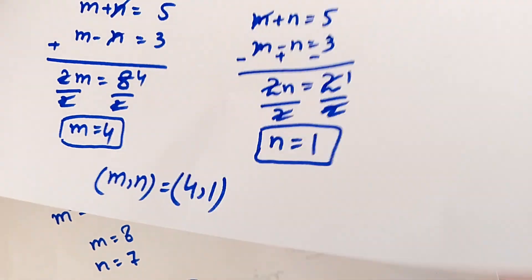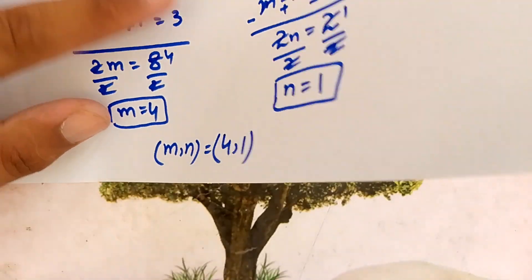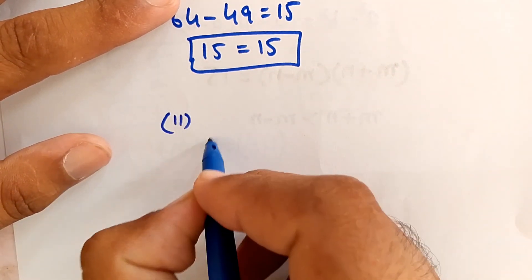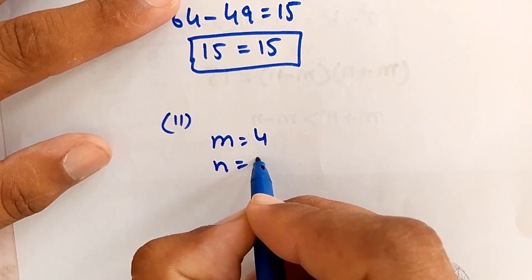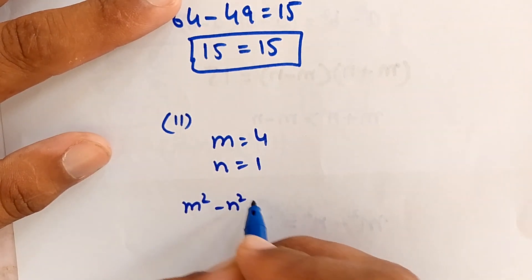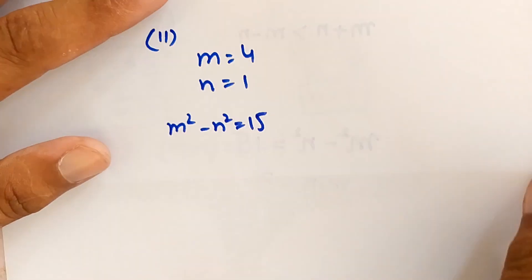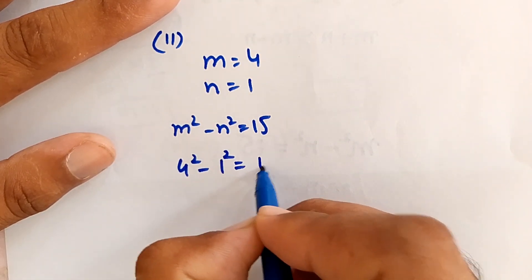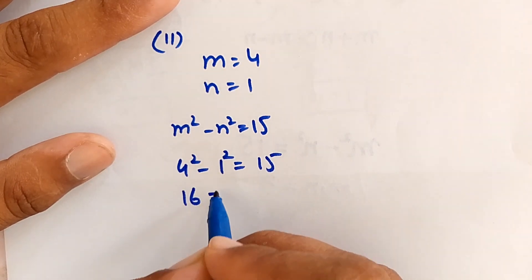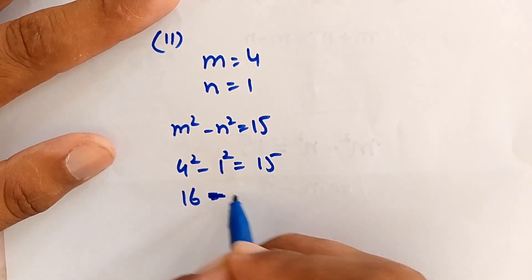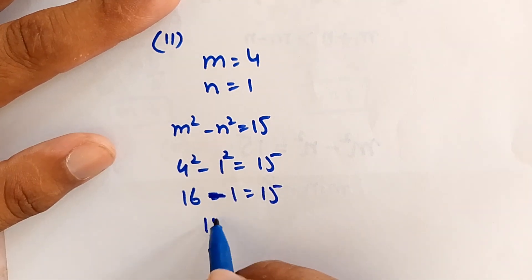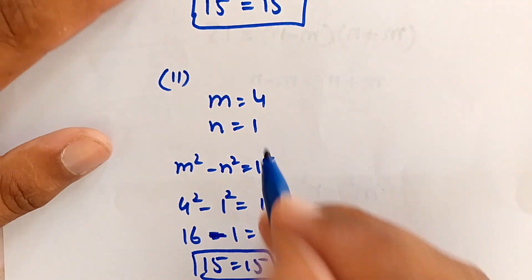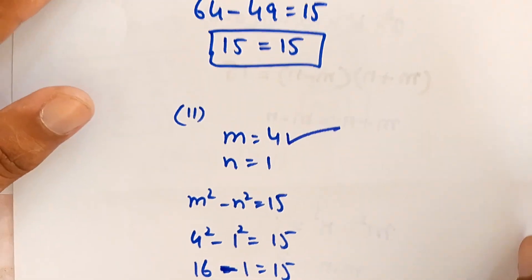For Case 2, m equals 4 and n equals 1. Substituting: 4 squared minus 1 squared equals 16 minus 1, which equals 15. This confirms the Case 2 values are also correct.